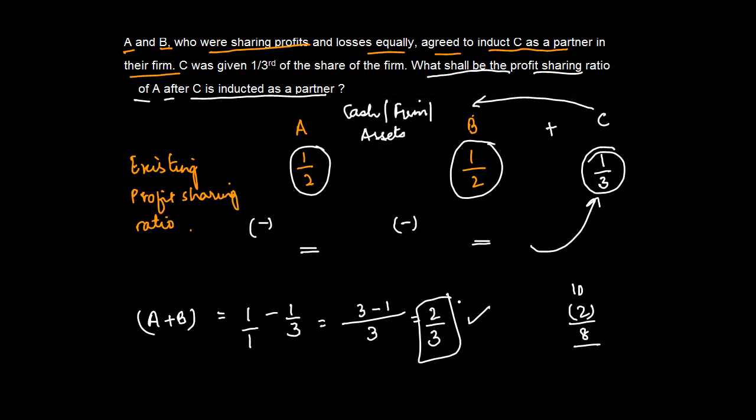So if 2/3 is what is left behind, then the inherent assumption is that this 2/3 is going to be shared one half, which is the existing sharing ratio of A. We're not looking at any subtraction or anything. So one half of this will be 1/3.